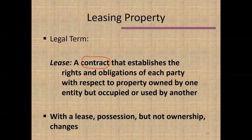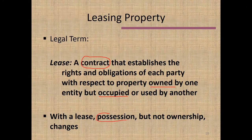A lease is a type of contract that establishes the rights of each party — the owner of the property as well as the person who is going to possess or occupy the property. With a lease, the issue is possession or occupation, not ownership. Ownership doesn't change; the owner still owns it, although the owner's ability to possess or use the land is either ending for a period of time or being restricted in some way.